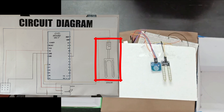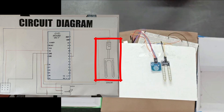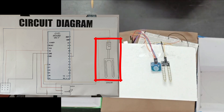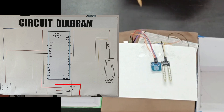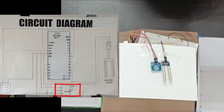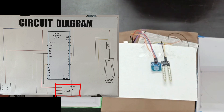Once this is done, the moisture sensor will pass the signal to the servo motor, and the servo motor will move in either direction depending on whether it is dry or wet waste. In this way, it will segregate dry and wet waste.